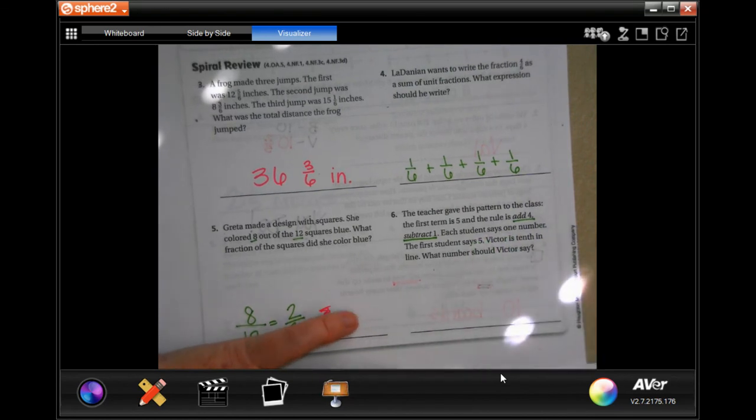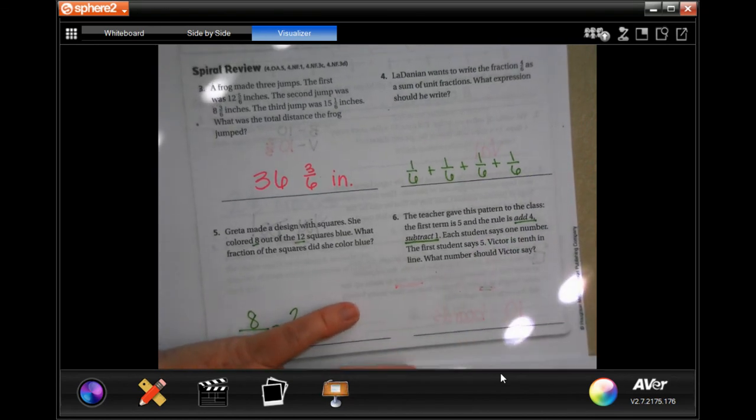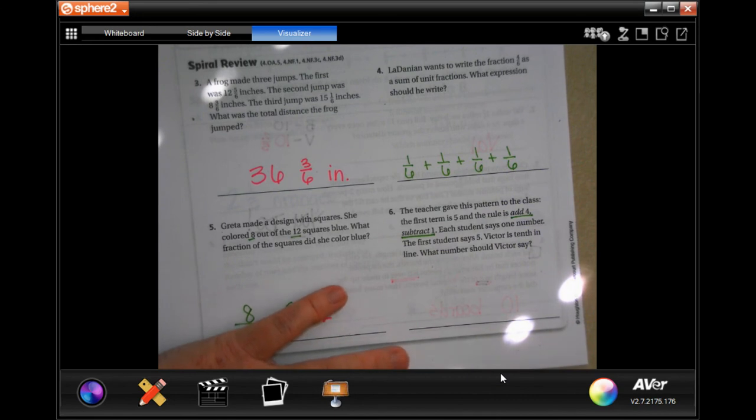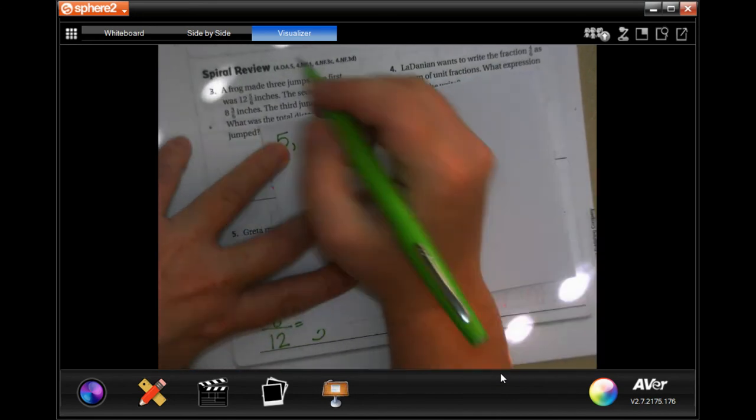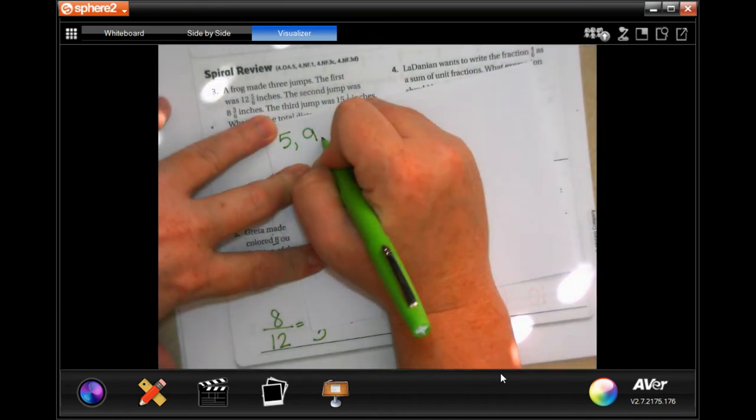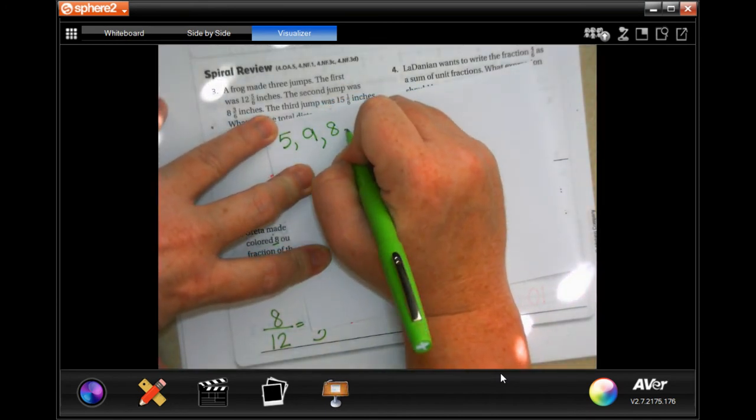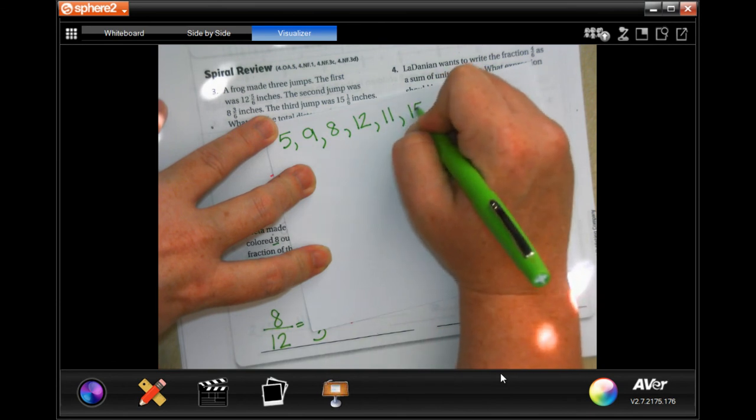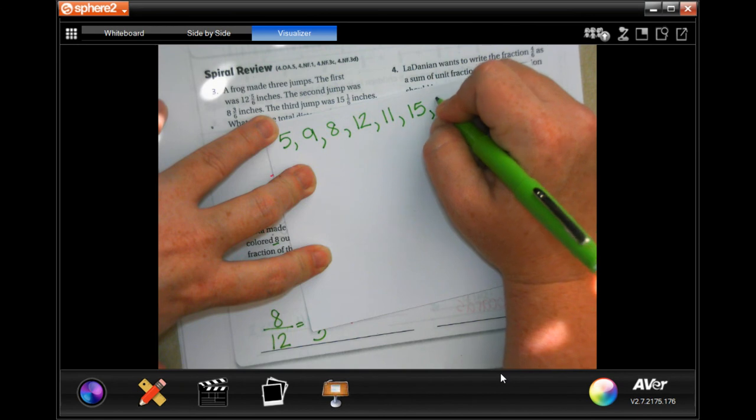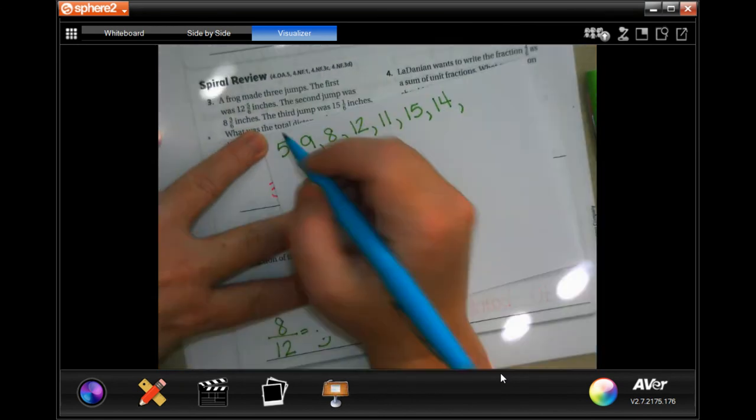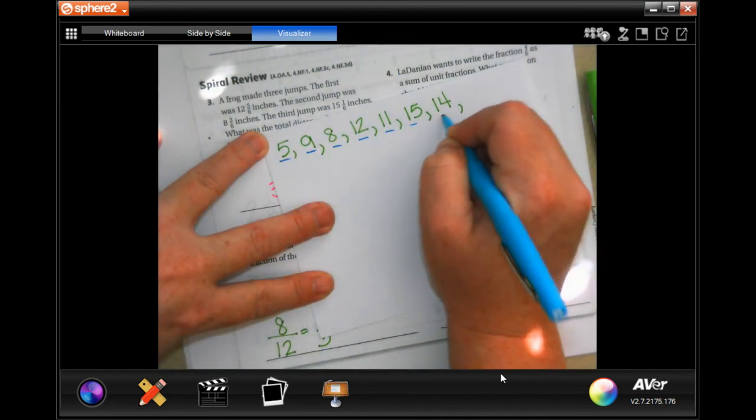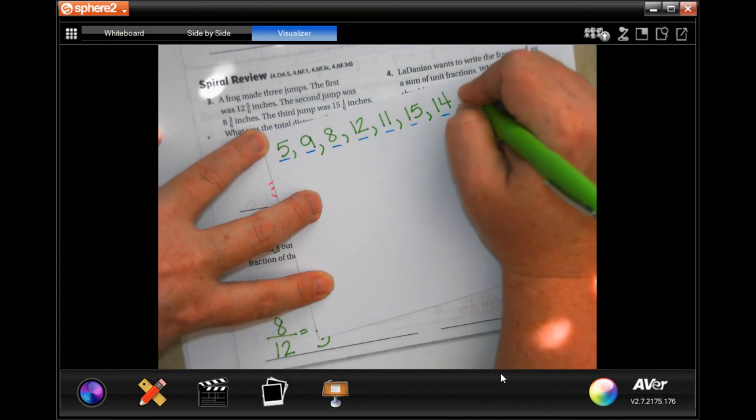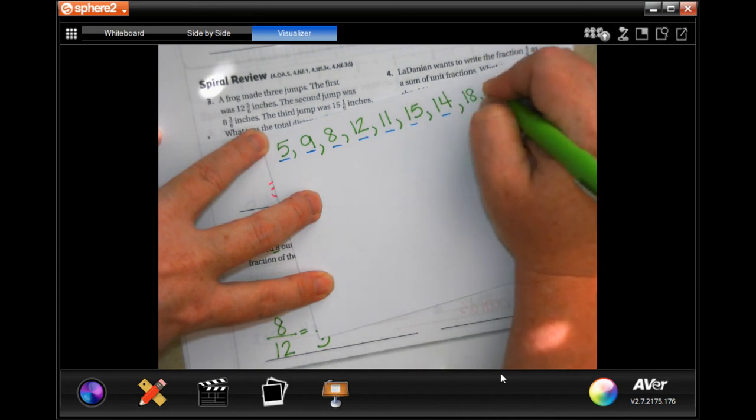Actually the second student is going to say the add 4 one, and then the third student is going to say subtract 1. So we would start with 5, add 4 which is 9, subtract 1 which is 8, add 4 which is 12, subtract 1 which is 11, add 4 which is 15, subtract 1 which is 14. So we're at 1, 2, 3, 4, 5, 6, 7, almost there guys. Add 4 which is 18, subtract 1 which is 17.